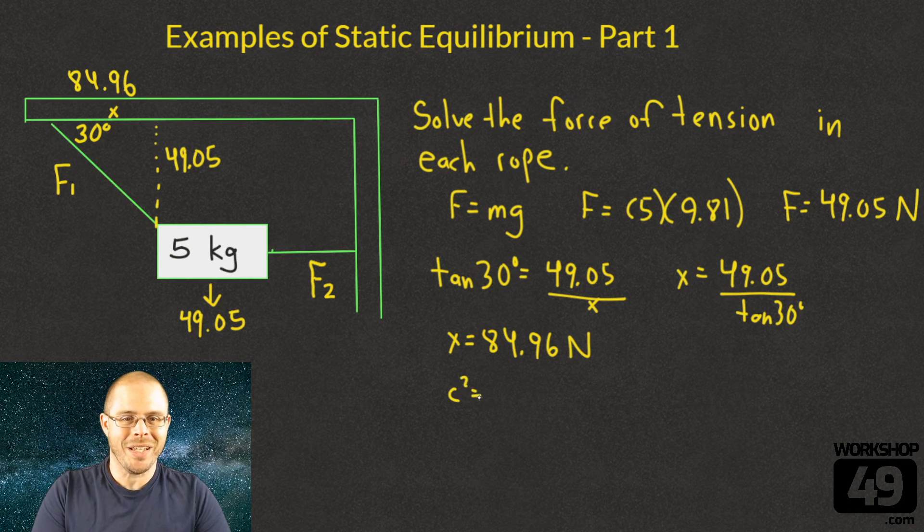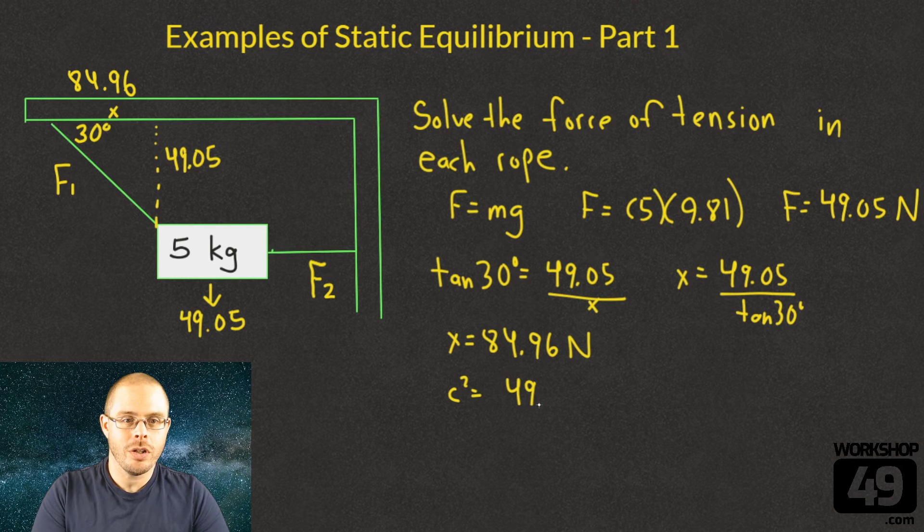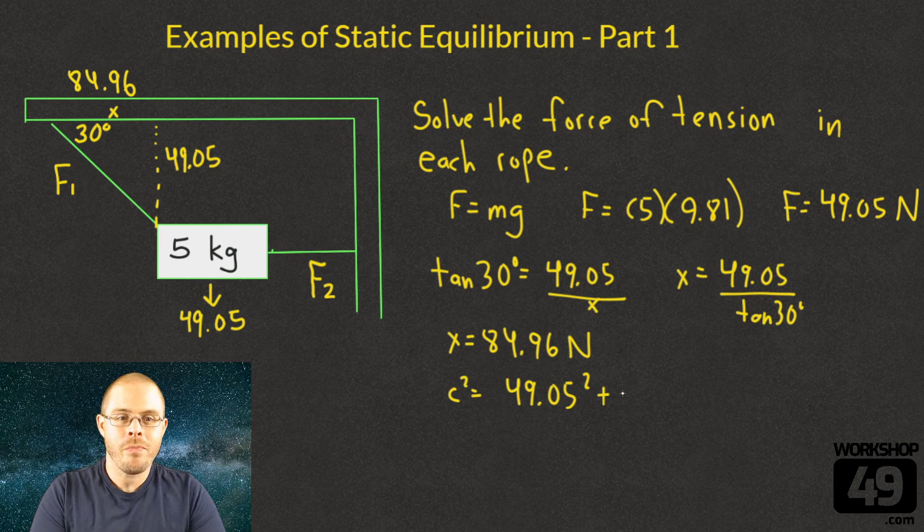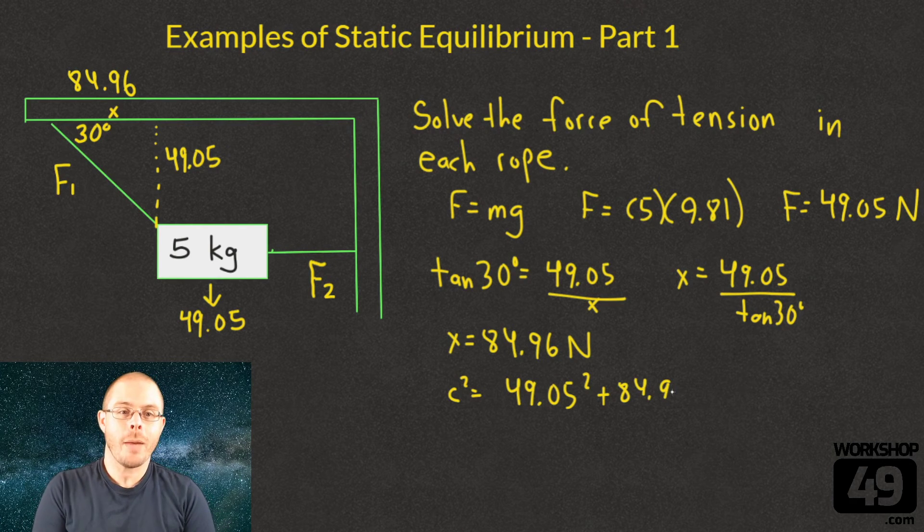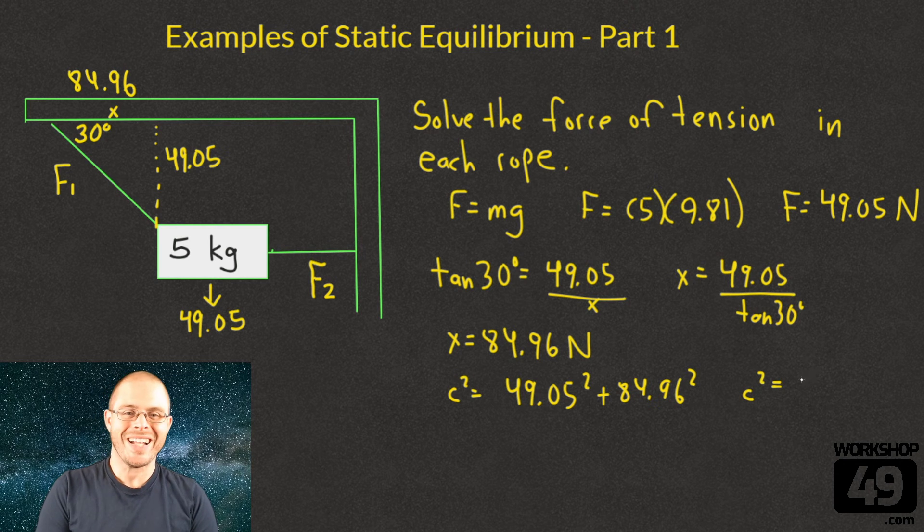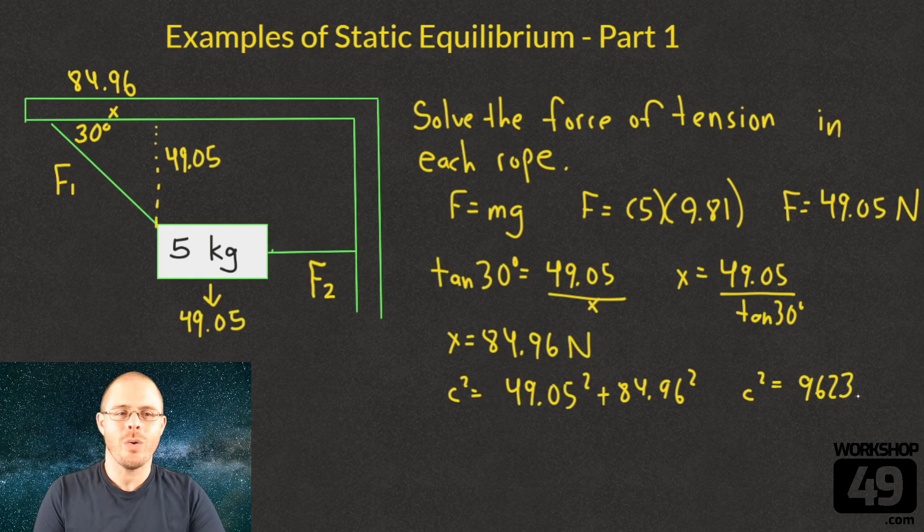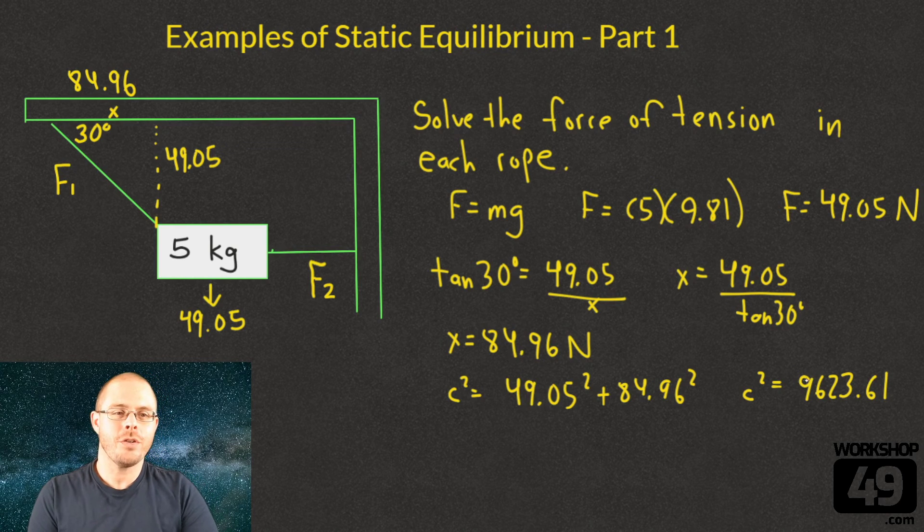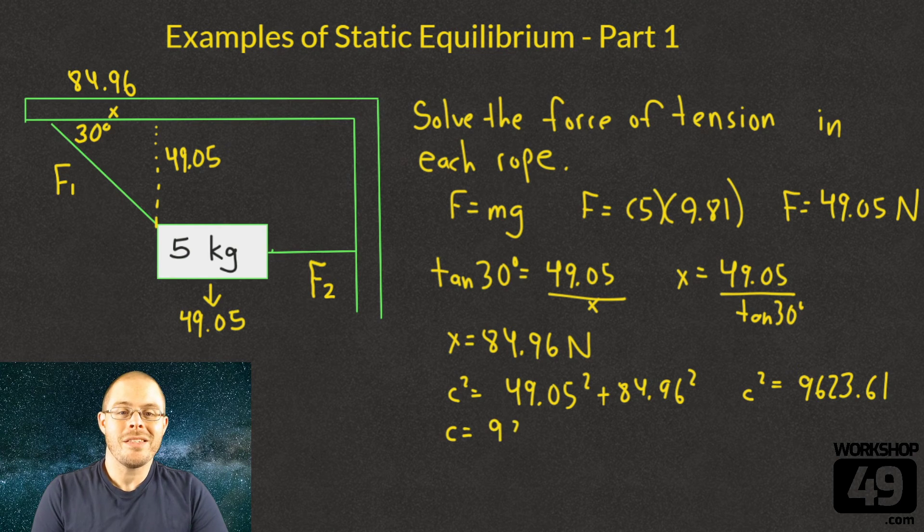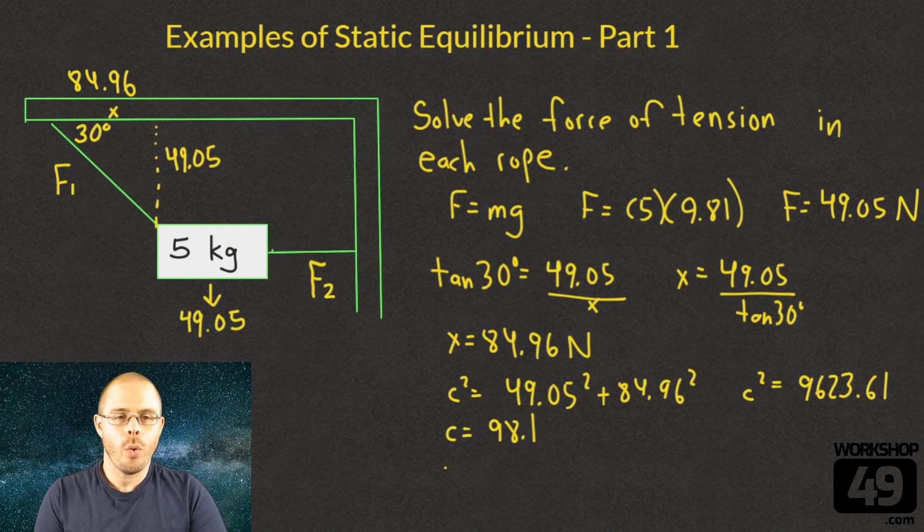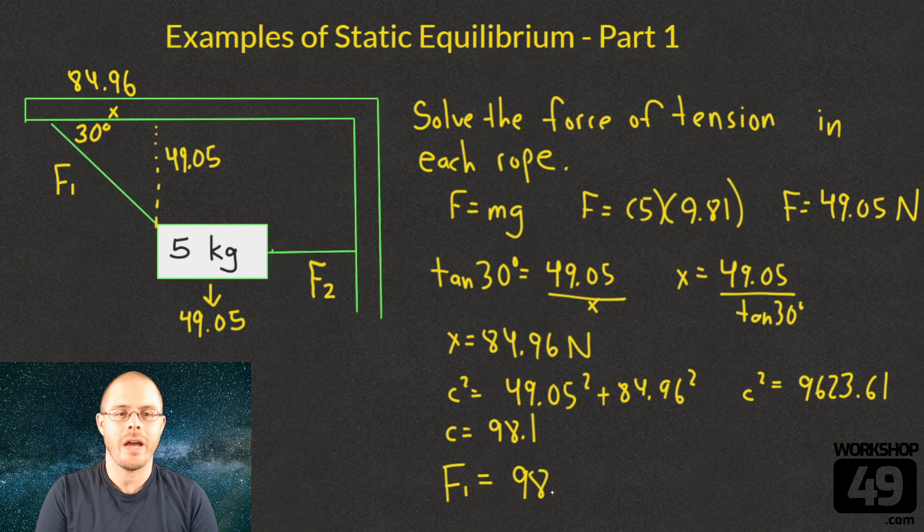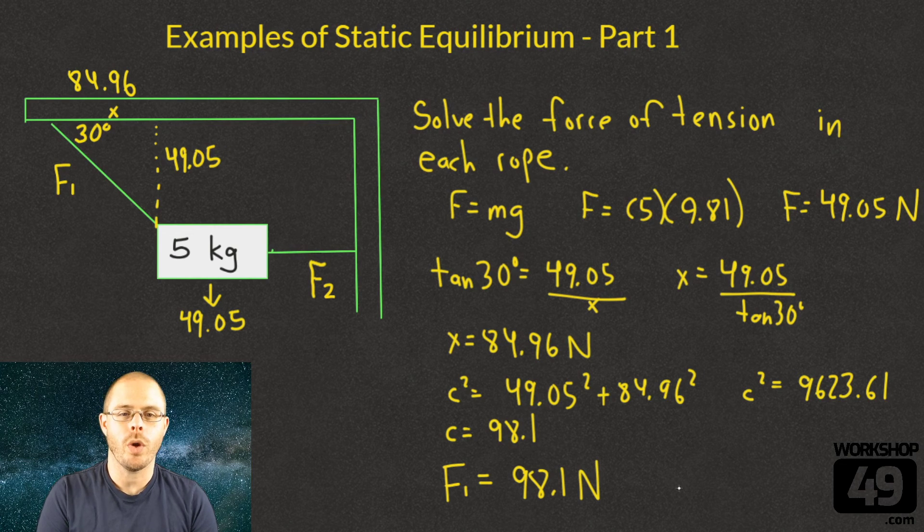We'll deal with that in a bit. Let's get the entire force of tension on that first rope. We can use Pythagorean theorem to get this hypotenuse. C squared is 49.05 squared plus the 84.96 squared. We can clean this up so that we get the C squared equals 9623.61, square root both sides. C is going to equal 98.1. That is our first force. The tension on that first rope is 98.1 newtons.